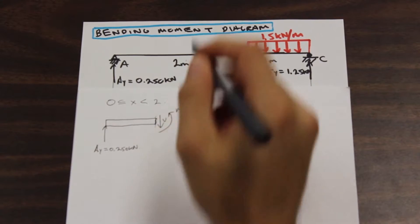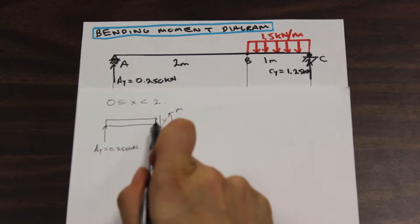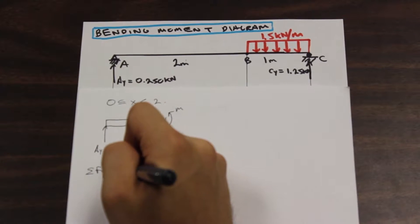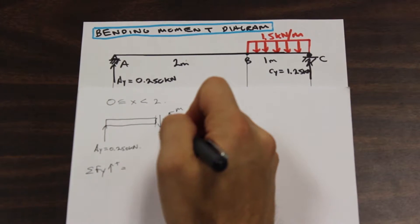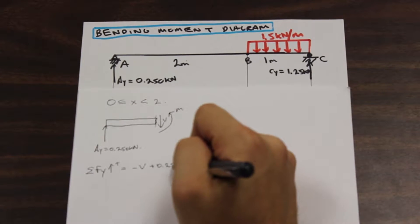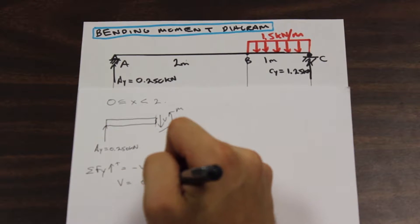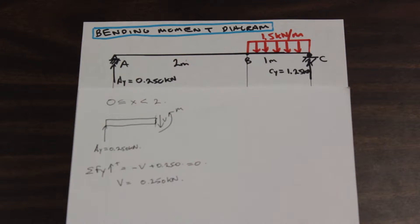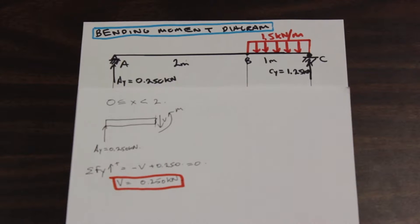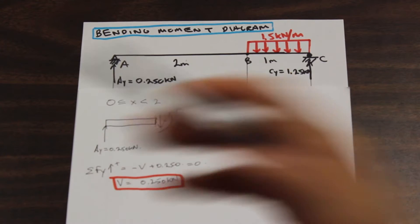We're going to take the forces in the y-axis and also look at the moment from this point. Let's start with the shear. We're going to say that up is our positive direction. We have a downward shear, so negative V, and we have an upward Ay of plus 0.250, and that's equal to zero. So our shear is equal to 0.250 kilonewtons. That was fairly straightforward, and that is the first formula we needed to derive to draw our bending moment diagram.